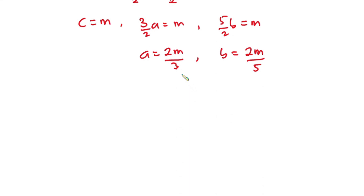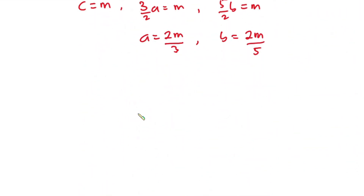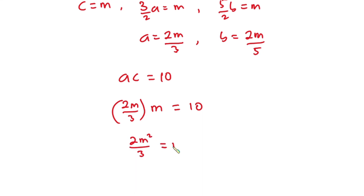What is the value of m? From the third original equation we have ac is equal to 10. We know a is equal to 2m over 3, so we have (2m/3) times c. We know c to be m, so we have m here, and this is equal to 10.